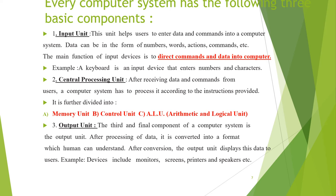The CPU is known as the brain of the computer. After receiving data and commands from users, the computer system processes all types of instructions. The CPU is further divided into main parts: the Memory Unit, the Control Unit, and the ALU — Arithmetic and Logical Unit.